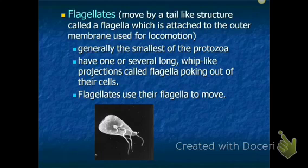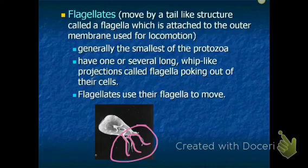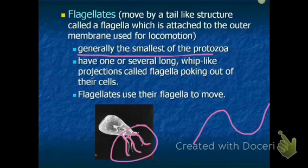The next type are flagellates, which move by a tail-like structure called a flagella attached to the outer membrane. Flagella are long whip-like projections, and flagellates move them back and forth — kind of like a fish uses its tail to swim — for locomotion through water. Flagellates are generally the smallest type of protozoa and can have one or several flagella.